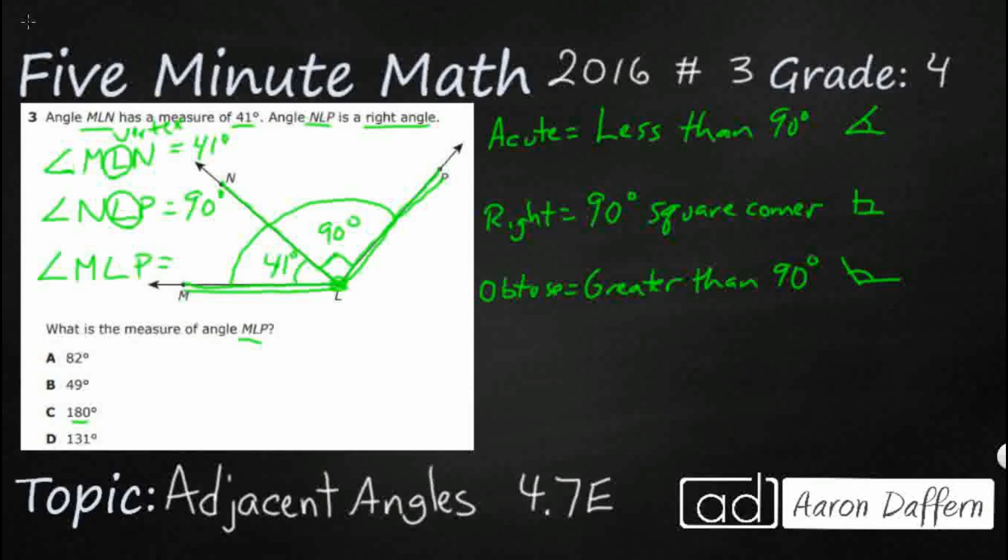But if we notice that, well, MLP definitely is going to be obtuse. Look how big this is. This is an obtuse angle. If we're looking from here to here. So, that means it's going to be greater than 90. So, it's not going to be 82. It's not going to be 49. Those are both less than 90. And it's not going to be 180, because 180 is actually a straight angle. It looks like a straight line with just a dot in the middle, which means we don't even have to add these up.